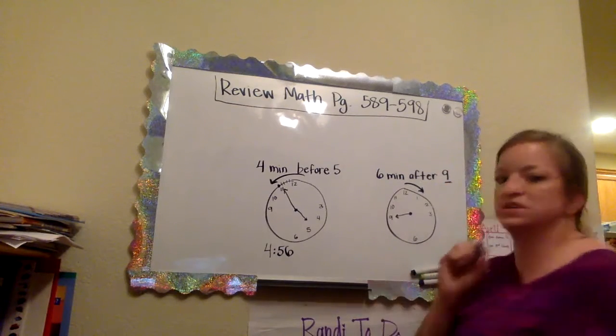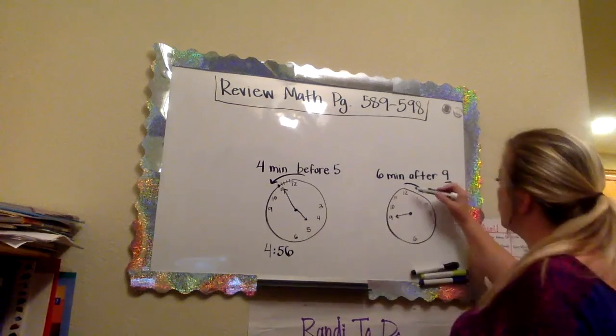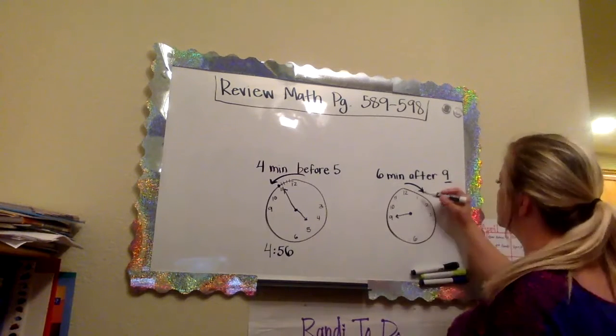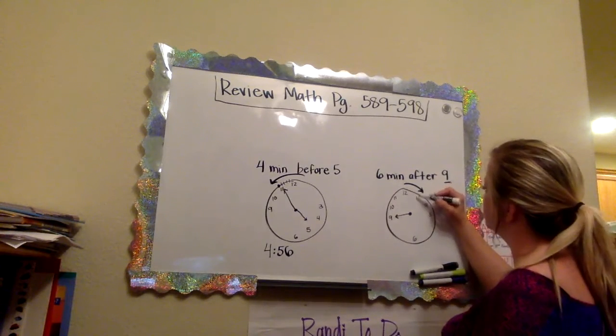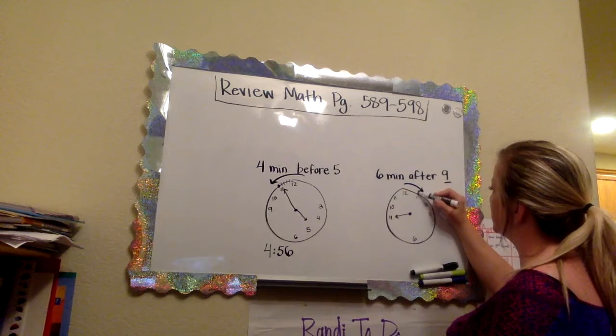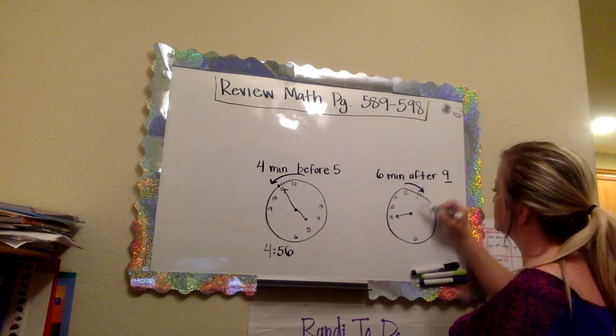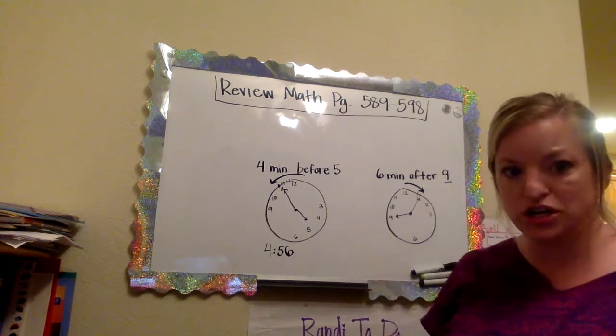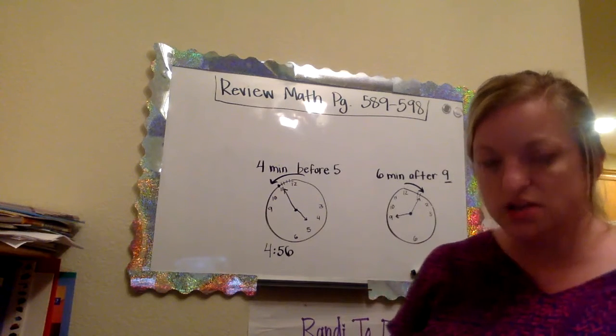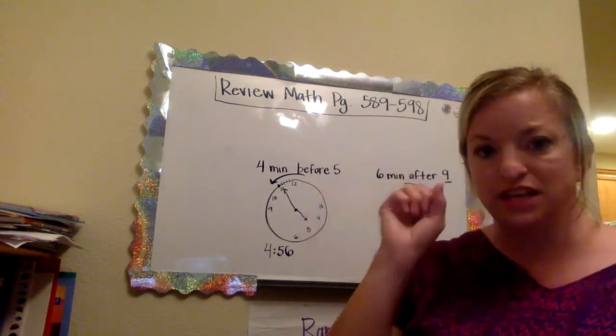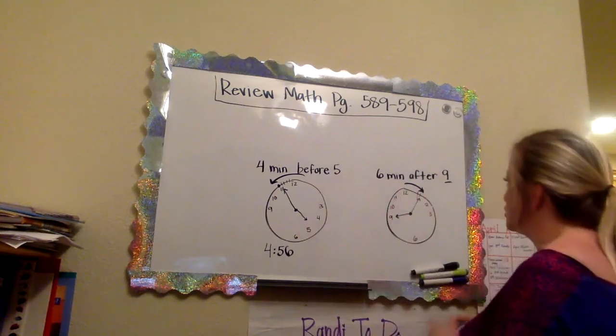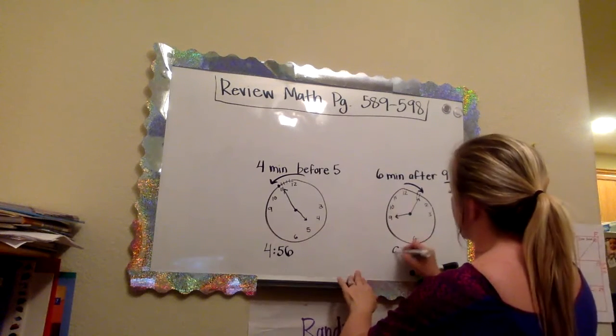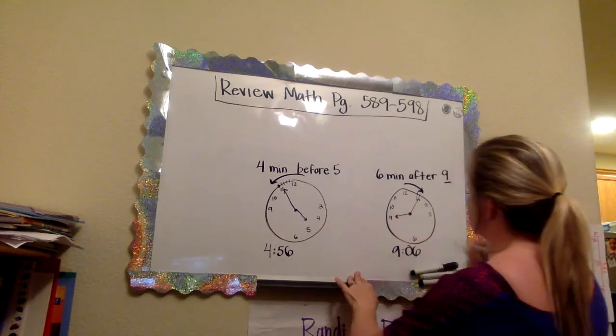As your minute hand moves, this hour hand gets closer and closer and closer to the next number. But it's only six minutes. So I'm pretty safe leaving it right at the nine. Now it's six minutes. I can count six minutes out. One, two, three, four, five, six. Or I know that this is one group of five. If I make it to the one that's five and six. So it's faster. And I'm a third grader. I like those shortcuts.